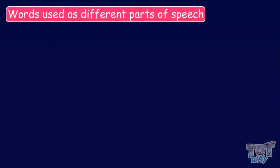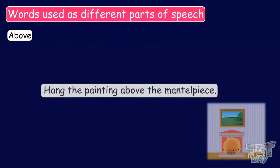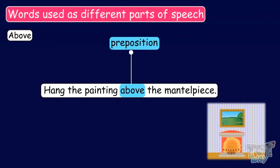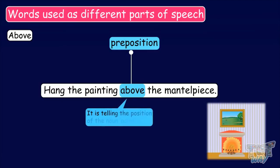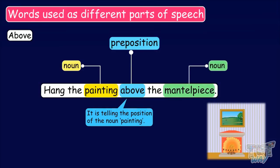The first word is 'above'. Above is a preposition. Let's use it as a preposition in a sentence: Hang the painting above the mantelpiece. Here, the word above is being used as a preposition as it is telling us about the position of the noun painting with respect to the other noun, mantelpiece.